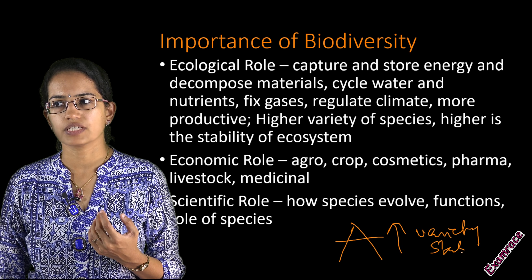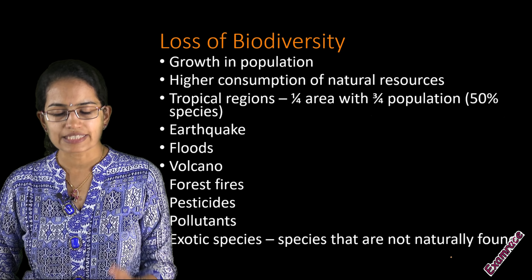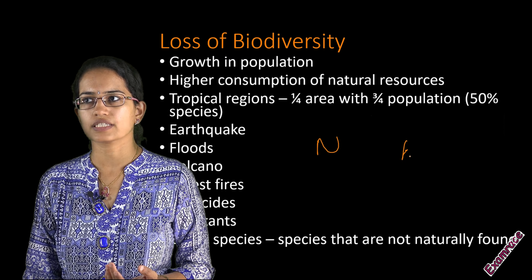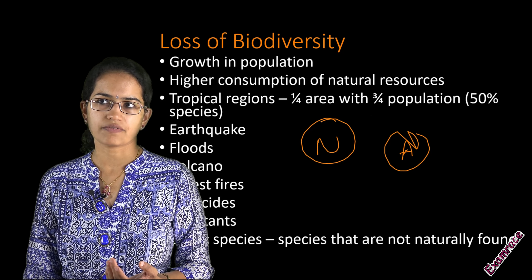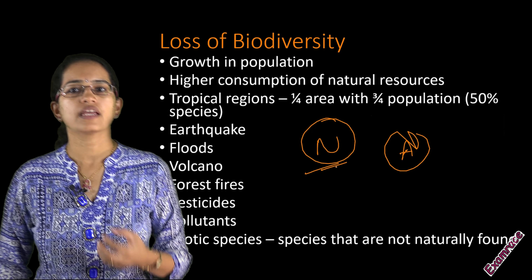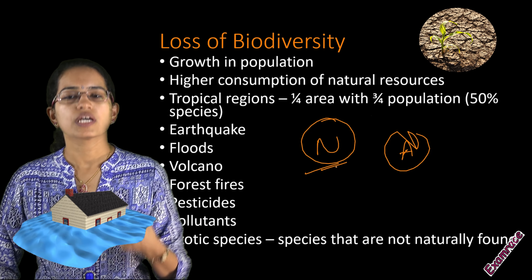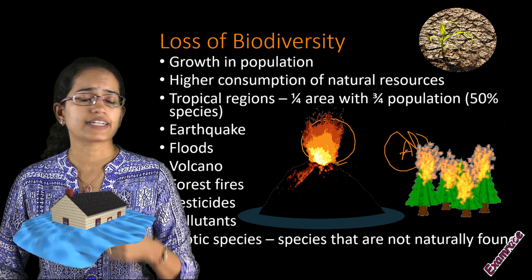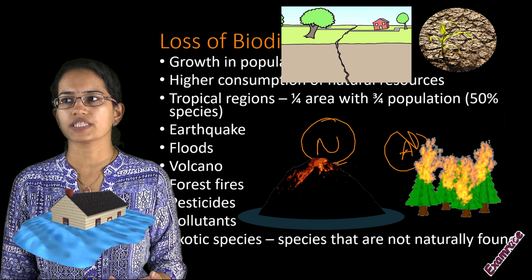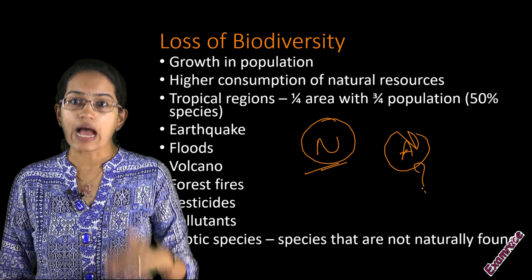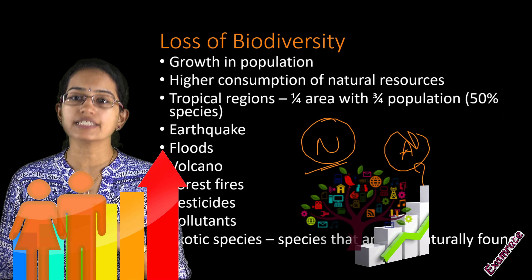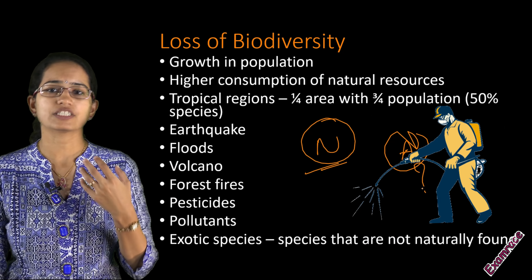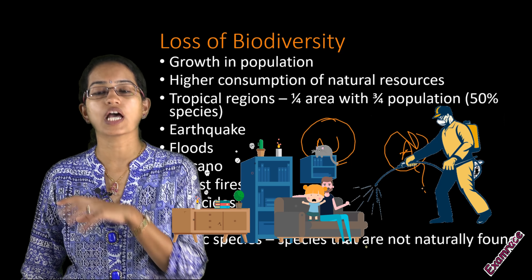Next, the loss of biodiversity. There are two ways: natural and anthropogenic. Natural ways could be a flood, a drought, a forest fire, volcanic activity, or earthquake activity. Anthropogenic causes include a rapid rise in population and higher consumption of resources, as well as pesticides and pollutants — all caused by human beings.